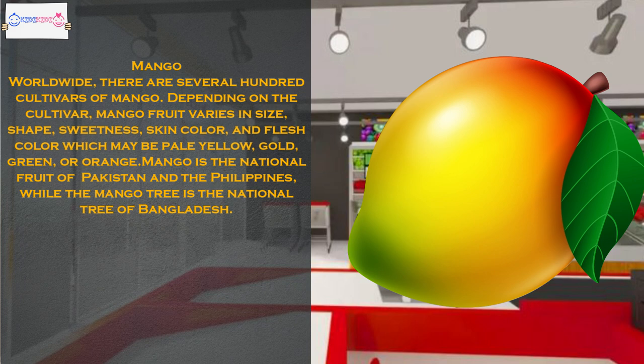Worldwide, there are several hundred cultivars of mango. Depending on the cultivar, mango fruit varies in size, shape, sweetness, skin color, and flesh color which may be pale yellow, gold, green, or orange. Mango is the national fruit of Pakistan and the Philippines, while the mango tree is the national tree of Bangladesh.